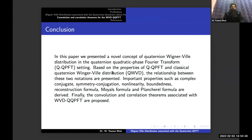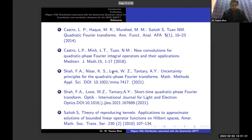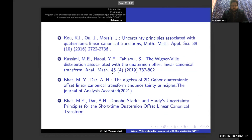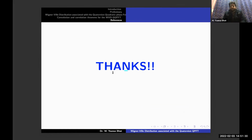In conclusion, in this paper we presented a novel concept of the quaternionic Wigner-Ville distribution in the quaternionic quadratic phase Fourier transform setting. Based on the properties of this transform and classical quaternion Wigner-Ville distribution, the relations between these two notions are presented. Important properties such as complex conjugate, symmetry conjugation, non-linearity, boundedness, reconstruction formula, Moyal's formula, and Plancherel formula are derived. Finally, we obtained the convolution and correlation theorems for this proposed transform. These are some of the references used for this work. Thank you for your kind attention.